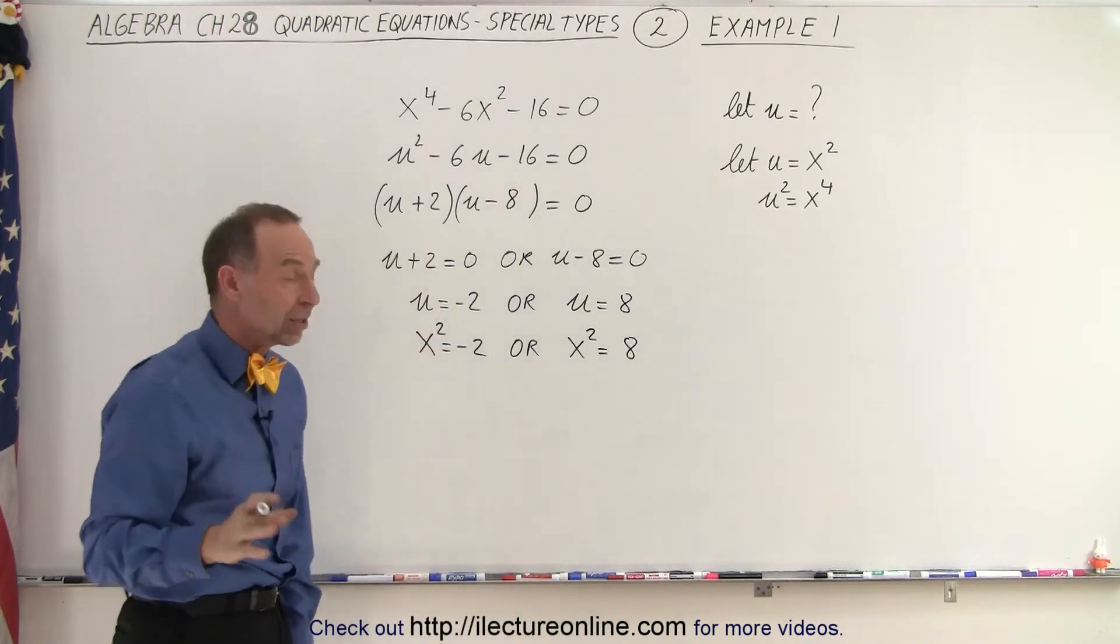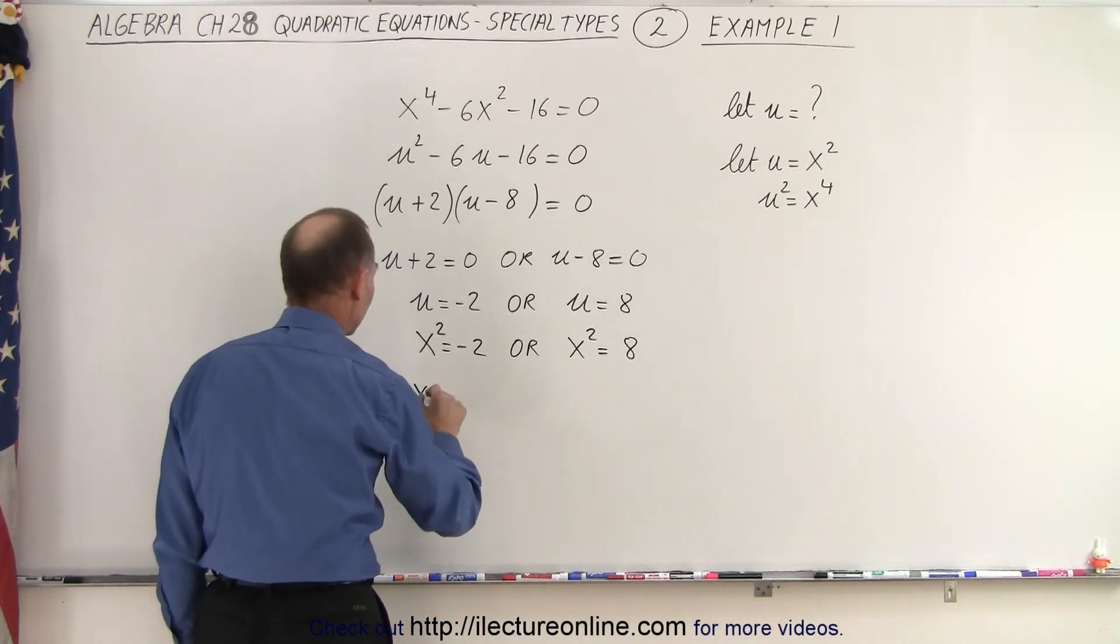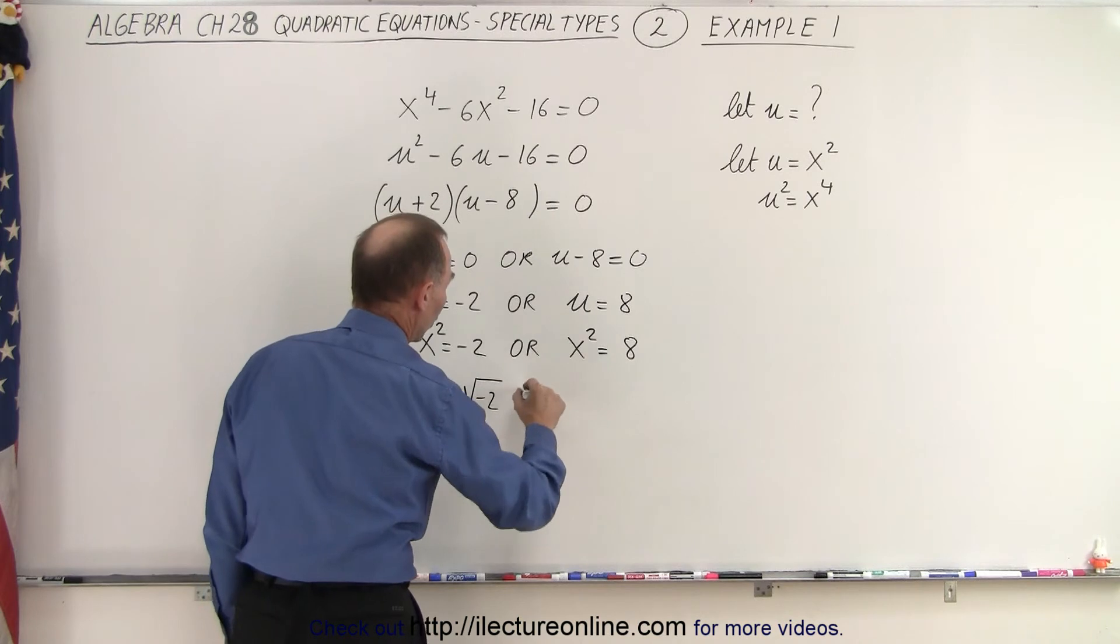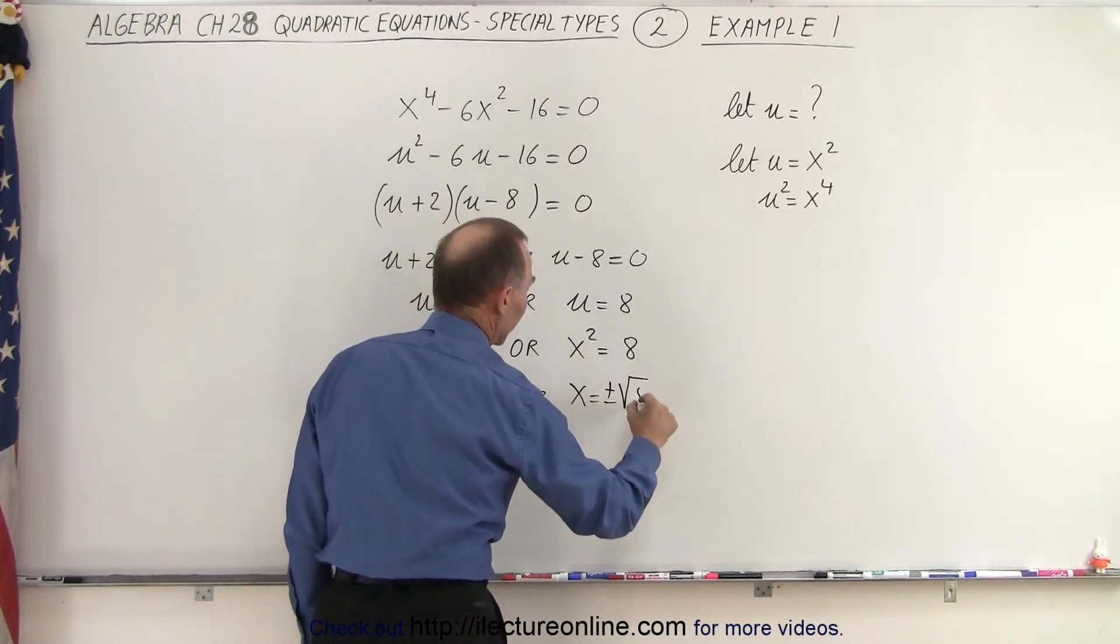So now to find x, I need to take the square root of both sides. So in this case, I get x is equal to plus or minus the square root of negative 2. Or, in this case, x is equal to plus or minus the square root of 8.